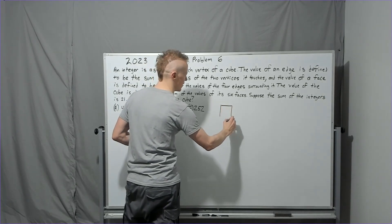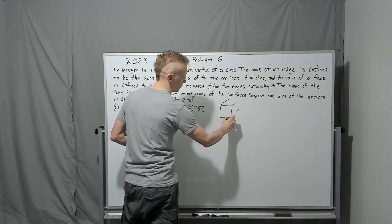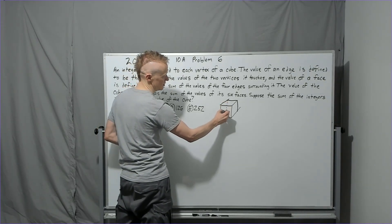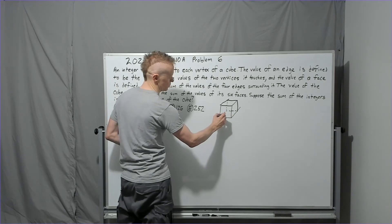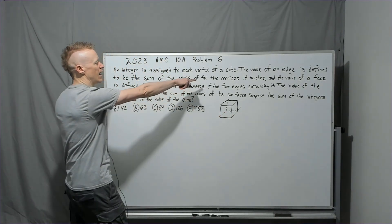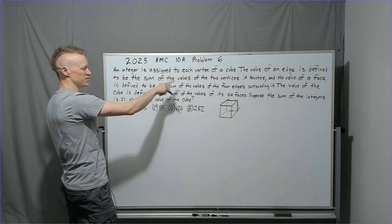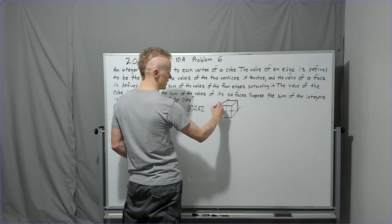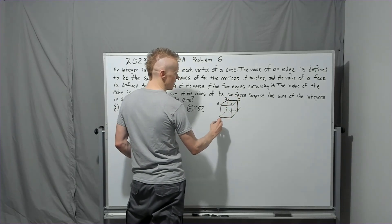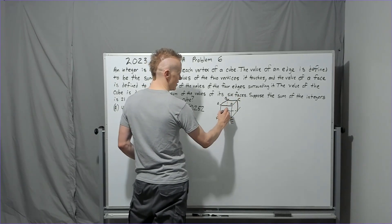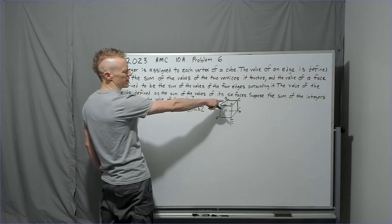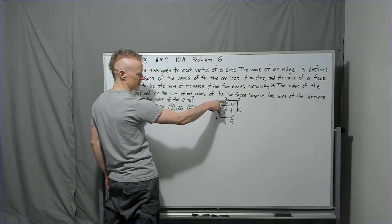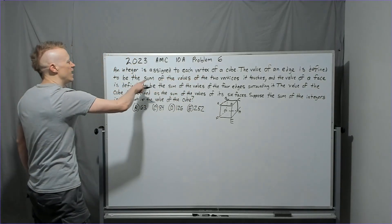Here's the cube. The value of an edge is defined to be the sum of the values of the two vertices it touches. So maybe we could label vertices a, b, c, d, e, f, g, h. Then a plus d would be this edge, a plus f would be this edge, and a plus b would be this edge.